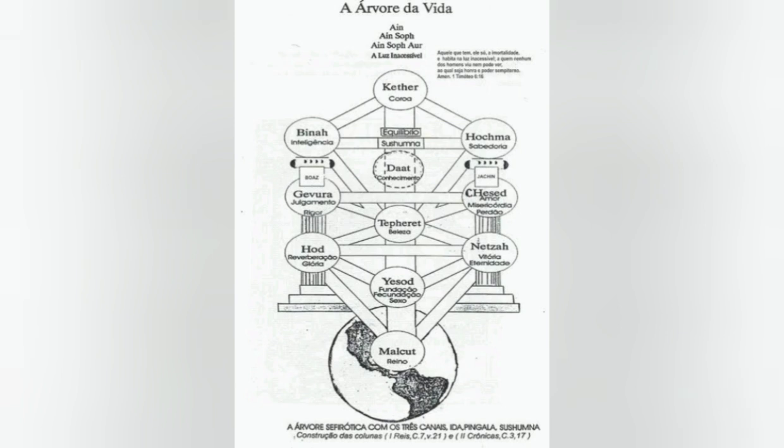Netzach, eternidade, simboliza a vitória, a resistência e a perseverança. Hod, glorificação, representa a glória, a submissão e a devoção. Yesod, fundamento, simboliza o fundamento e a base da criação, associado aos princípios de comunicação e conexão. Malkuth, reino, representa o reino físico, o mundo material, e é associado à manifestação concreta da criação.